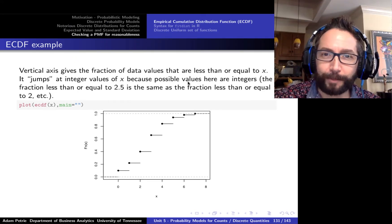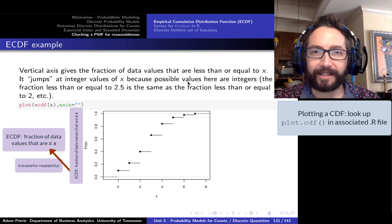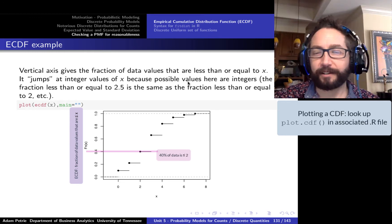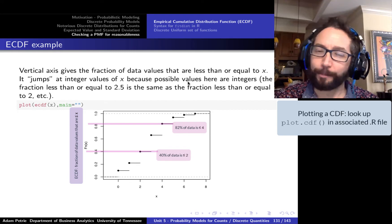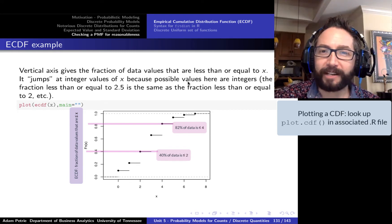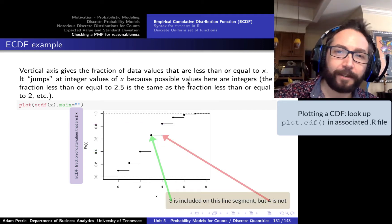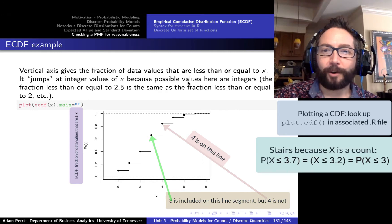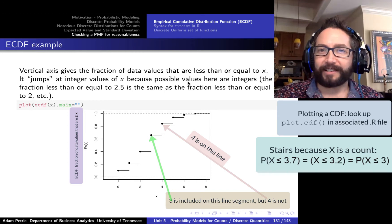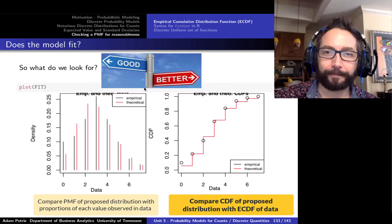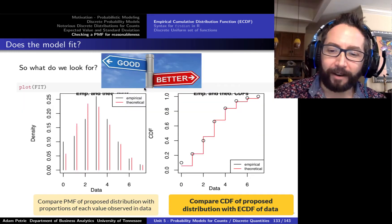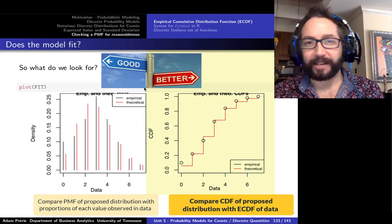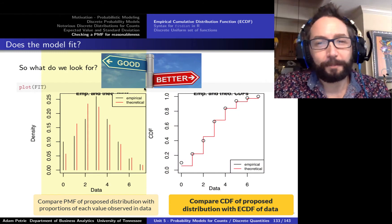We can plot the empirical distribution function the same way we plot the CDF of the probability model — as a stair-step plot showing how the fraction of data values less than or equal to x changes as x increases. Each horizontal line contains the endpoint on the left but not on the right, because of the definition: the probability of at most a particular value is the same for 3, 3.5, 3.7, 3.9, etc. We want to compare this with the proposed PMF and CDF side by side, but the CDF comparison has the final call.